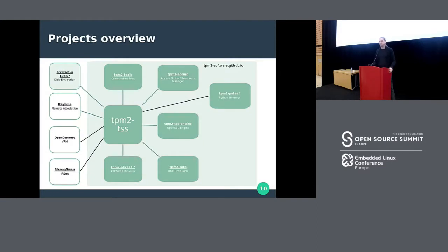Here's a quick project overview. We have seven projects in the core community space enabling TPM use. There are also other projects not in our GitHub namespace that are picking up TPM functionality based on our libraries. The ones I'm most involved with include Crypt Setup, which I'll visit later, but there's also OpenConnect and StrongSwan — two VPN solutions you might be familiar with.